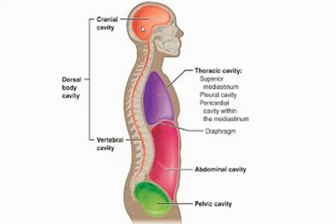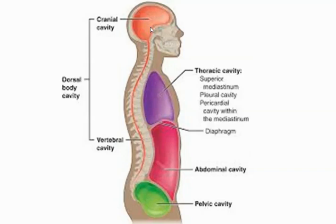We also have body cavities. There is the dorsal body cavity, the abdominal cavity, and the pelvic cavity. The dorsal body cavity includes the cranial cavity and the vertebral cavity — the vertebral canal through which the spinal cord moves. We also have the thoracic cavity. So in total, we have four major cavities in the body: the cranial, the thoracic, the abdominal, and the pelvic.